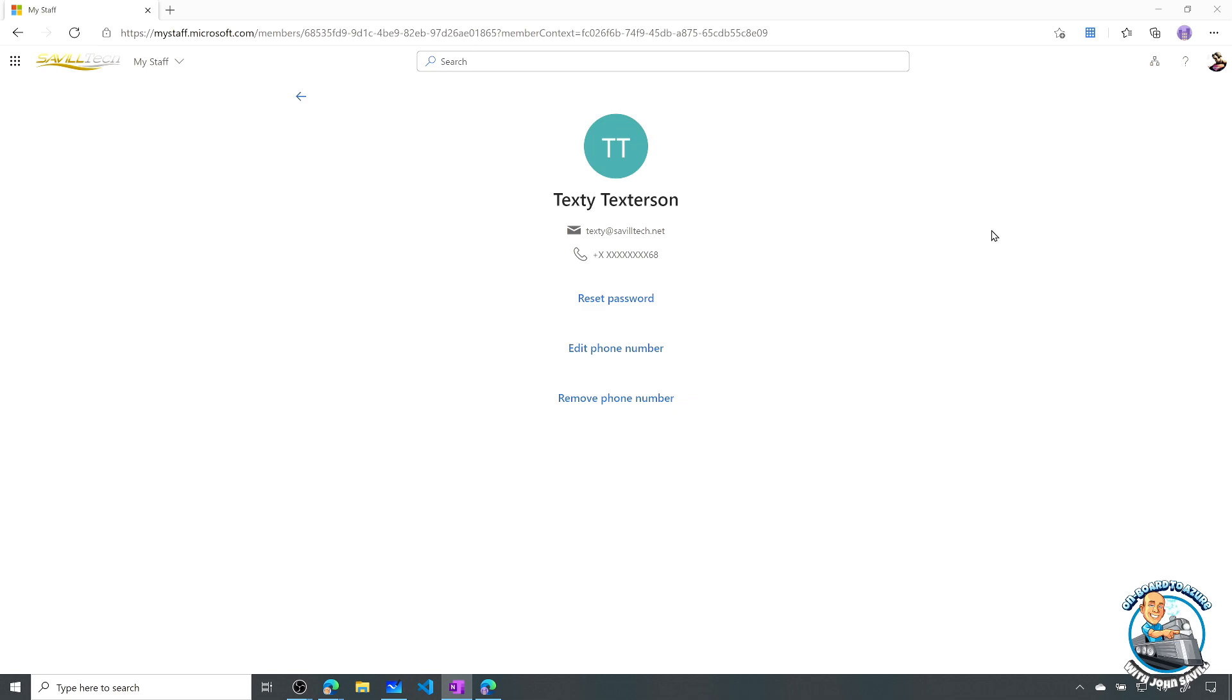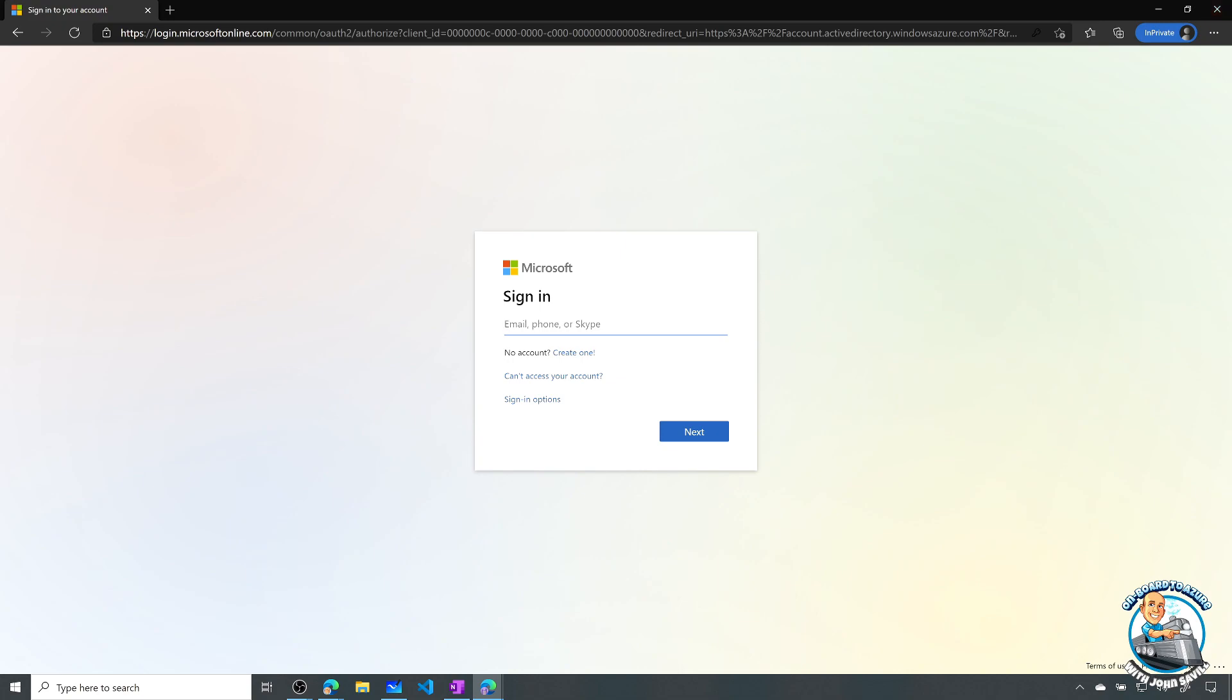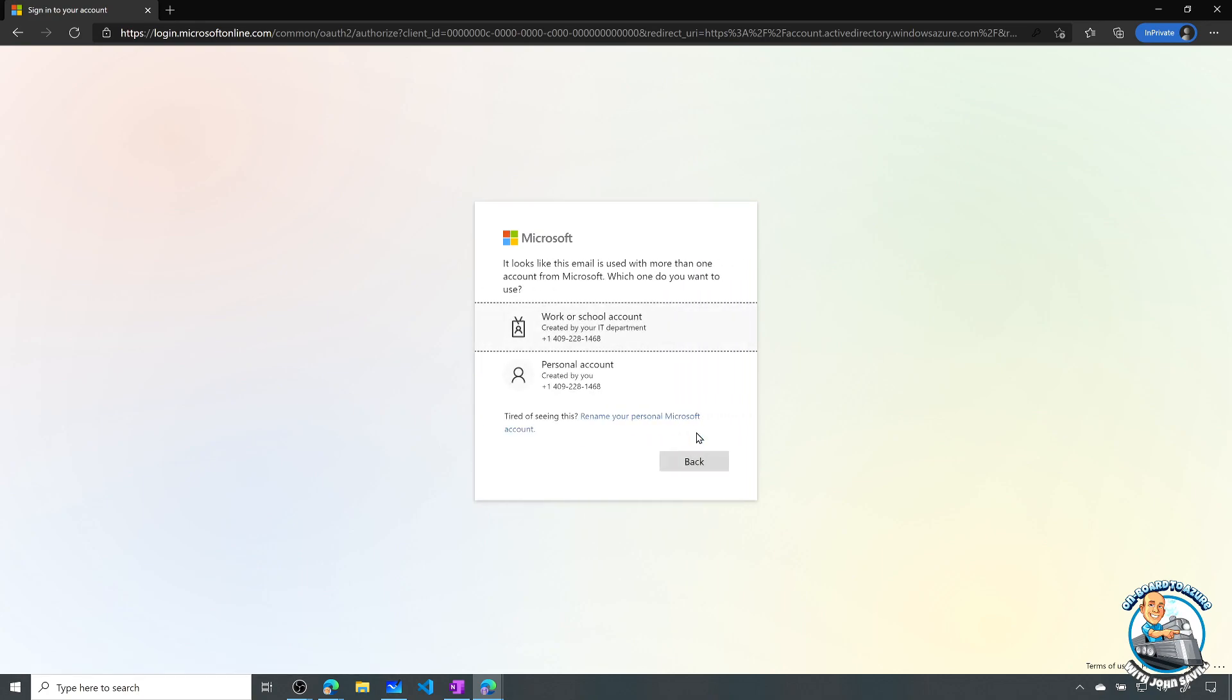So now this user actually has that configured. So what is their end user actual experience? So I'm just going to open up a new in-private window. And I'm just going to go to myapps.microsoft.com. Now I am Texty Texterson. All I know is my phone number. Now remember I just did the generic portal. I'm not saying slash savilltech.net or anything else. And I would just type in my phone number with the country code. So we just need to do a little bit of education. That's what you're going to use. And hit next.